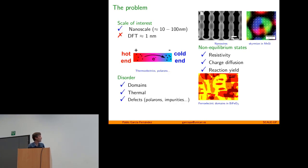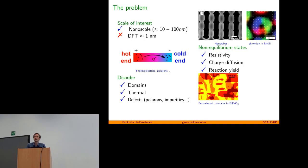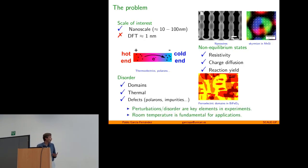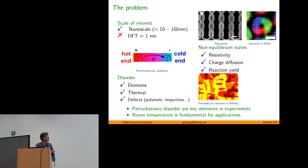If we want to simulate domains, have thermal information about how these domains move, or calculate defects and the effect of defects on properties, then DFT is restricted and not letting us move forward. It's also very important to see how these domains or disorder changes when we apply temperature, an electric field, or other perturbations that are always key elements in experiments.